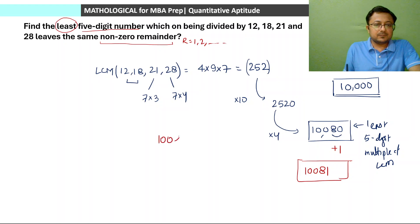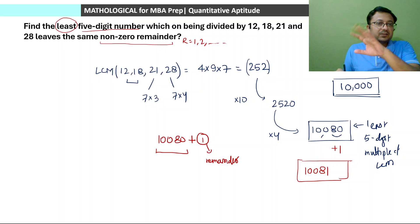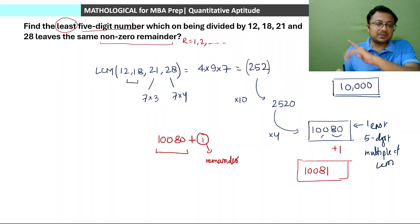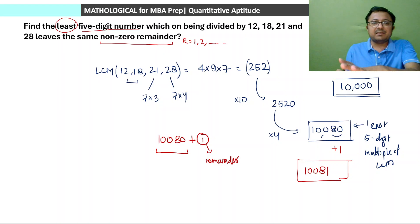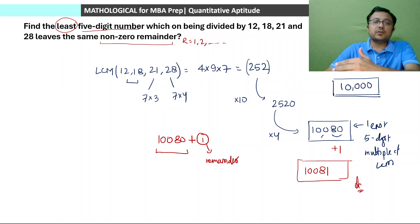If you divide 10,081 by 12, it leaves remainder 1. Similarly, dividing by 18, 21 or 28 each leaves remainder 1, because 10,080 is completely divisible and 1 is extra. This is the smallest number with the same non-zero remainder. If we wanted remainder 2, we'd take 10,082 — larger than 10,081. So the answer is 10,081, when remainder equals 1.